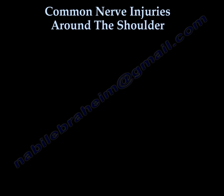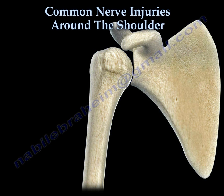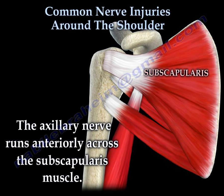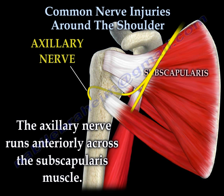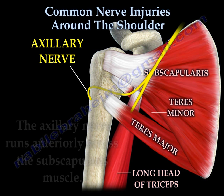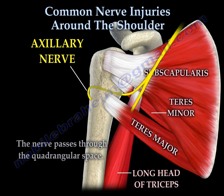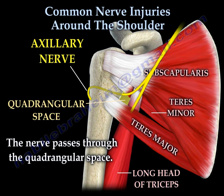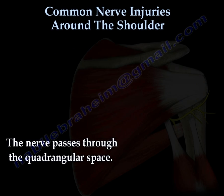The axillary nerve runs anteriorly across the subscapularis muscle. The nerve passes through the quadrangular space.